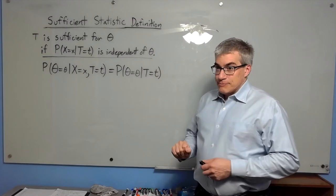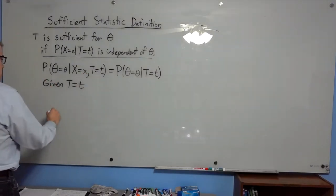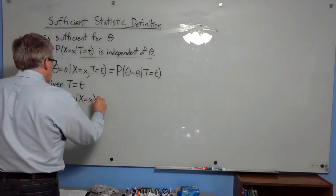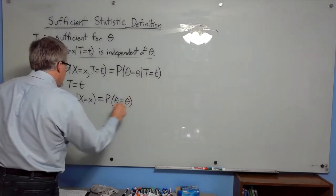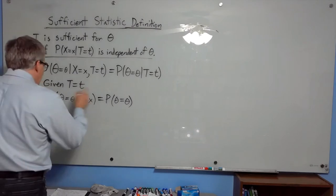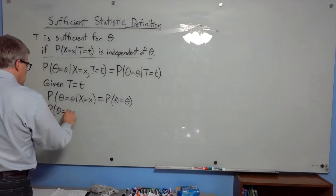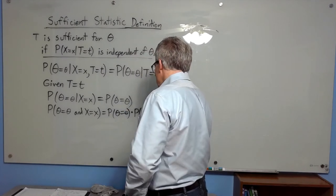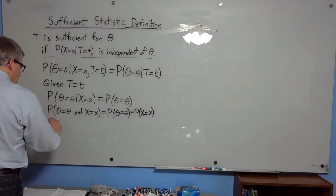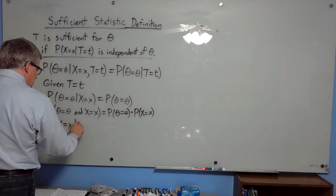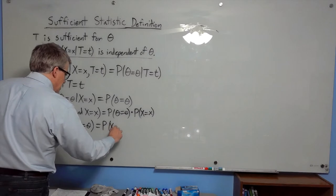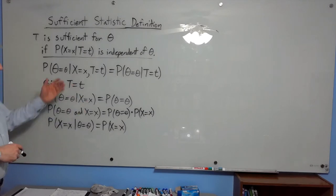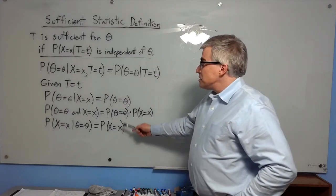How do we get that into that? Writing 'given t equals t' to shorten things: they're saying the probability that theta equals theta given x equals x is equal to the probability that theta equals theta. But that's the definition of independence — meaning the probability of theta equals theta and x equals x is the probability of theta equals theta times the probability that x equals x. That's also the same as saying the probability of x equals x given theta equals theta is equal to the probability that x equals x. All three of those express the independence of theta and data given the sufficient statistic.